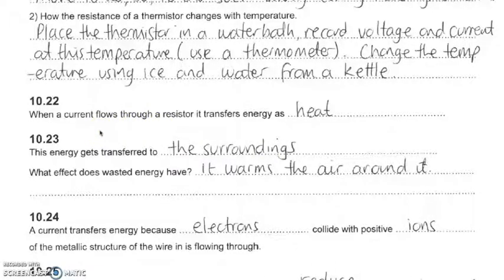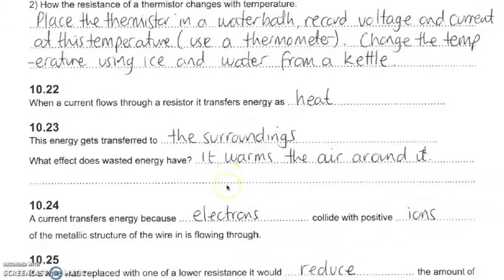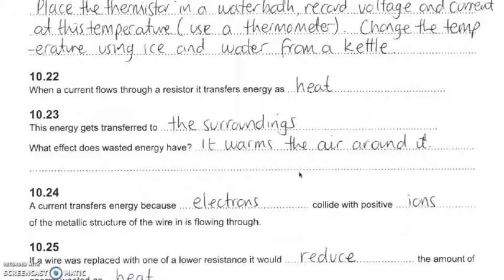As I mentioned, when current flows through a resistor it transfers energy as heat. We state current, the flow of current, as sort of electrical energy being present in the circuit. However, the electrons do crash into atoms and there is friction and we will get some heat. The heat will get passed to the surroundings and warm the air around it, so that's the wasted form of energy.